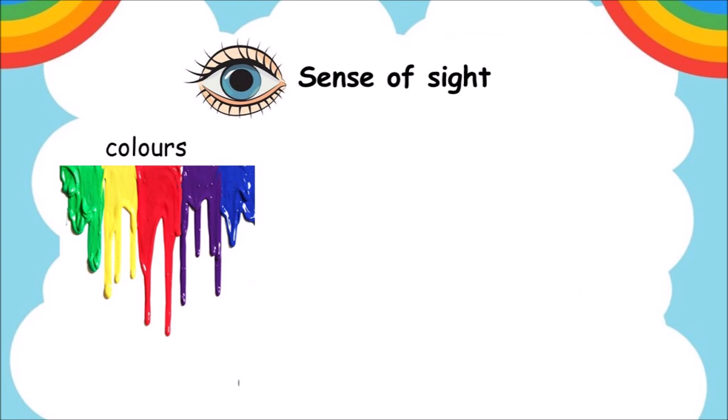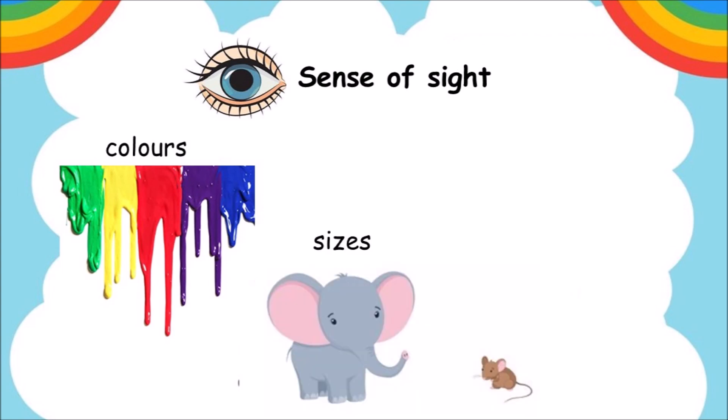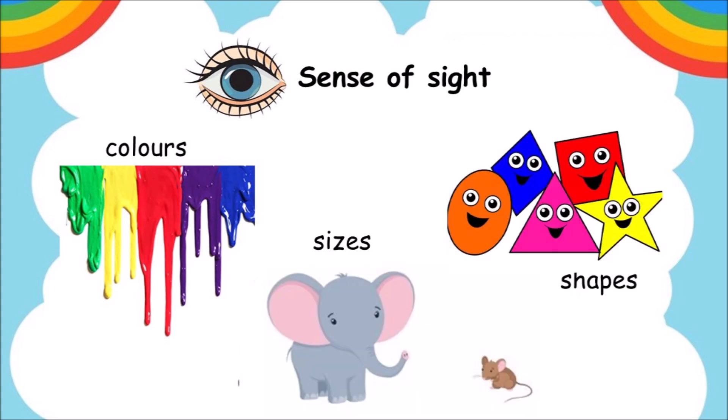Sense of sight: we can see different colors, different sizes, and different shapes.